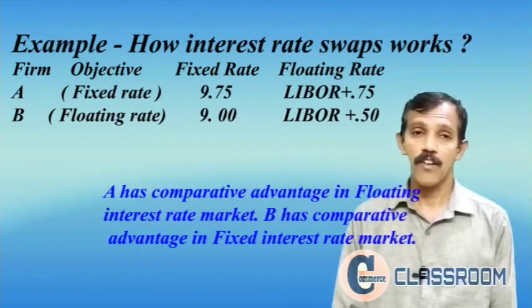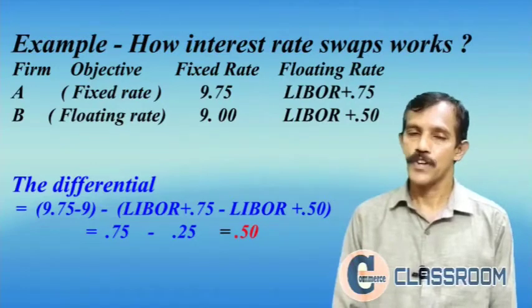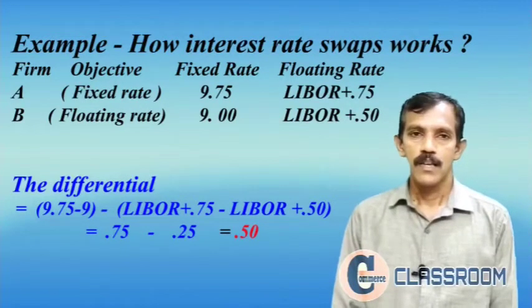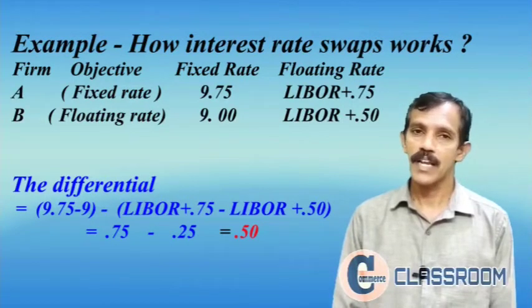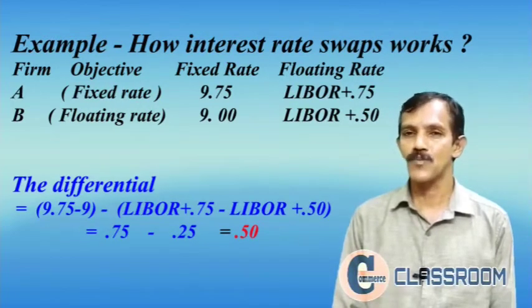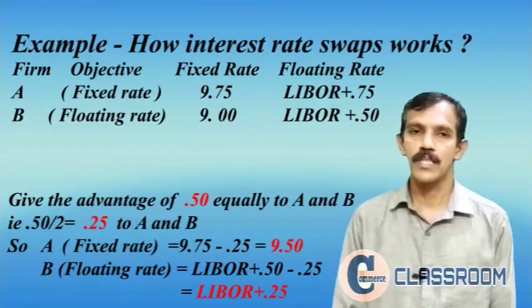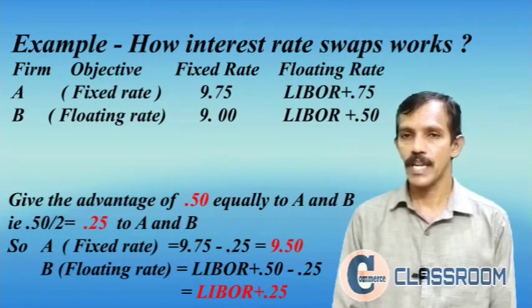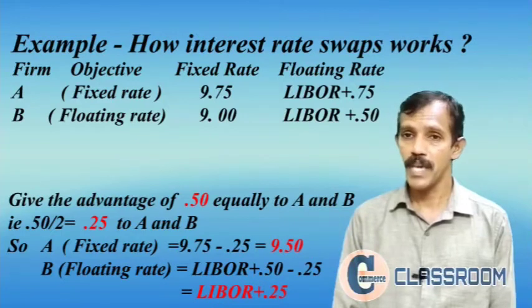Now we find out the differentials — the difference between the differences of fixed and floating interest rates between the two firms. The difference in fixed rate is 0.75 percent and the difference in floating rate is 0.25 percent. Taking the difference between these two: 0.75 minus 0.25 equals 0.50 percent. This 0.50 percent is the total advantage for Firm A and Firm B if they use an interest rate swap.